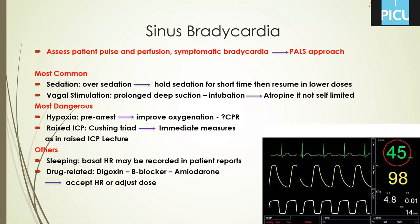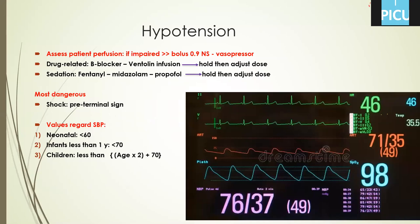Then we go to hypotension. As defined in the previous lecture: in neonates less than 60, infants less than one year less than 70, and children more than one year — use the equation double the age plus 70. If you have a patient with hypotension, check perfusion because hypotension is a pre-terminal sign. Don't wait for the patient to be hypotensive to suspect shock — by this point all compensatory mechanisms have failed. If perfusion is impaired, give a bolus of normal saline and start a vasopressor drug. Sometimes the patient is well perfused and only over-sedated or receiving a drug like a beta-blocker — hold for a time and adjust the dose.